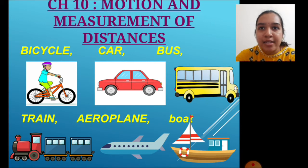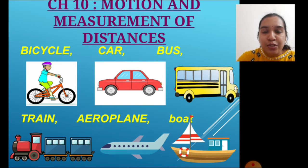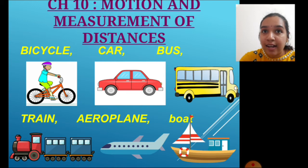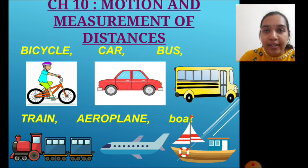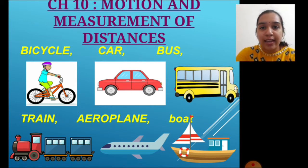Clearly observe these images. You all might have at least once travelled on these transport modes, or you may travel in the future. Here we see a bicycle, vehicle, car, bus, train, aeroplane, and a boat. These are the different means of transport that help us to travel from one place to another.